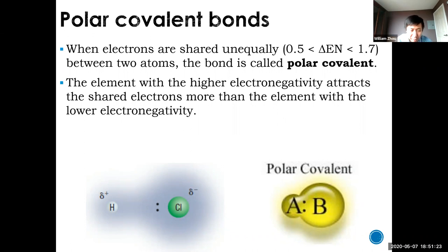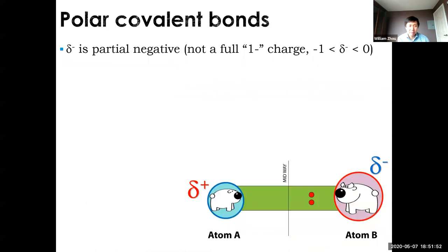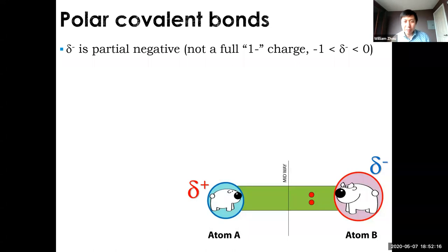The higher-electronegativity atom has the electrons closer to it. As a result, you have delta-negative on the more electronegative atom and delta-positive on the more electropositive atom. There exists a tiny difference in their overall net charge — the molecule is still neutral overall, but the distribution of charge is not uniform. Delta-negative means partially negative — not a full 1−, since you're still sharing, so the charge is technically between −1 and 0.